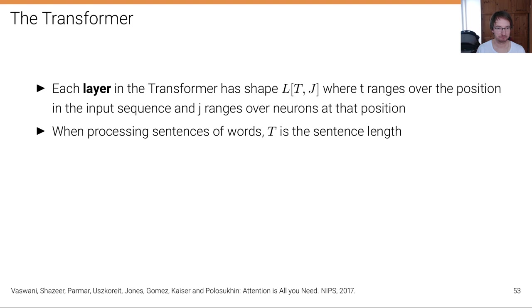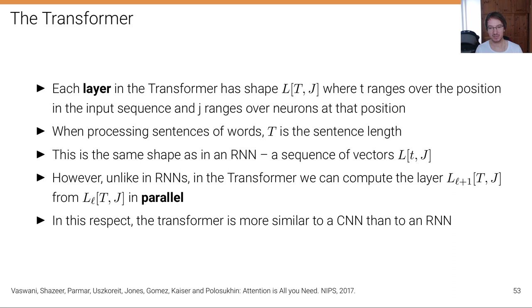Let's take a closer look at what the transformer does. Each layer in a transformer has a shape L[t,j] in Einstein notation, where t ranges over positions in the input sequence and j ranges over neurons at that position — essentially a matrix where for each word position we have a vector. When processing sentences, t is the sequence length. This is basically the same shape as in an RNN: a sequence of vectors, where each t,j is a vector.